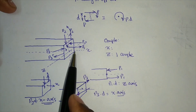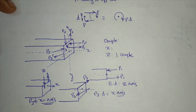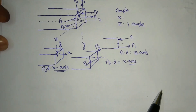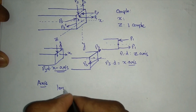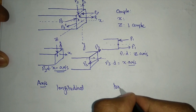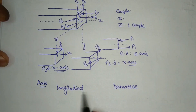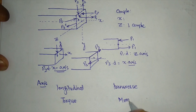We classify couples based on their axis. The axis can be the longitudinal axis (x-axis), the transverse axis, or the lateral axis. Whenever the axis of the couple is along the length — along the longitudinal axis — it is called torque. Whenever the axis is transverse, it is called a moment.